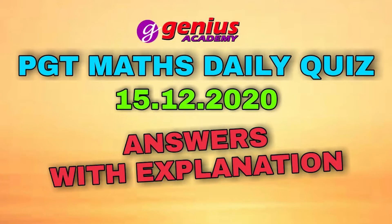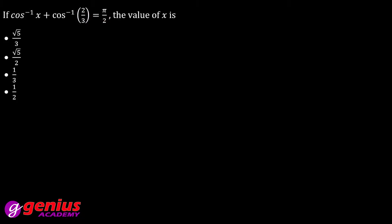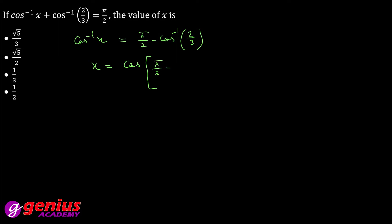15th December ke quiz ka solution dekhte hain. First question: if cos⁻¹(x) + cos⁻¹(2/3) = π/2, find the value of x. Toh x ki value nikalni hai, toh x wala ek taraf rakhiye: cos⁻¹(x) = π/2 − cos⁻¹(2/3). Isko aage solve karte hain.